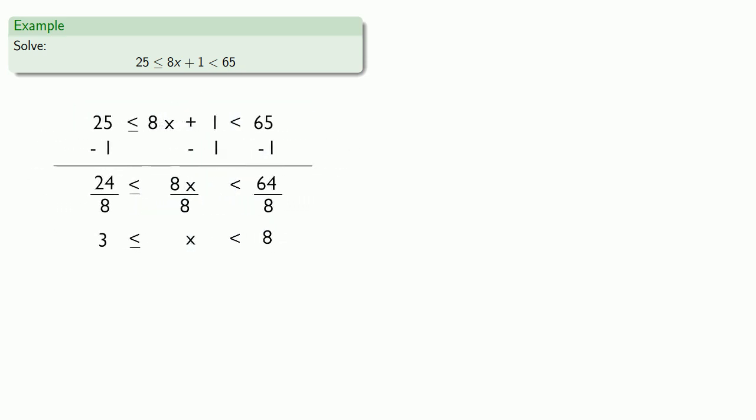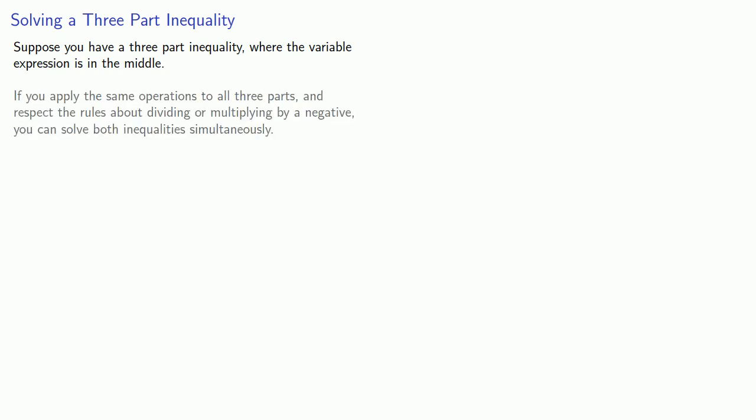And this leads to a very useful simplification. Suppose you have a three-part inequality where the variable expression is in the middle. If you apply the same operations to all three parts and respect the rules about dividing or multiplying by a negative, you can solve both inequalities simultaneously.